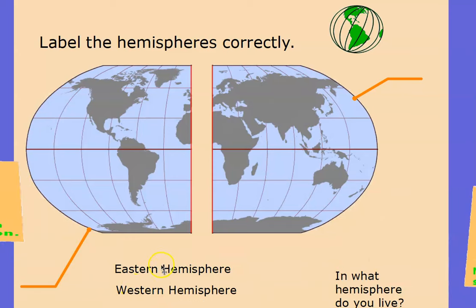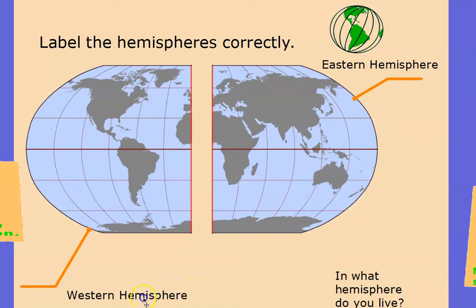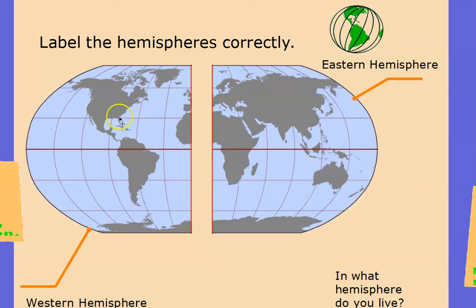If you labeled this the eastern hemisphere and this the western hemisphere, you would be correct. One more question: in what hemisphere do you live? Although we live in the eastern part of North America, we are in the western hemisphere — that's because the prime meridian has placed us on the western side of the globe. You could even say the northwest hemisphere, because if we get the equator involved, you'll notice that North America, the part where we are living, is towards the north part of the globe.